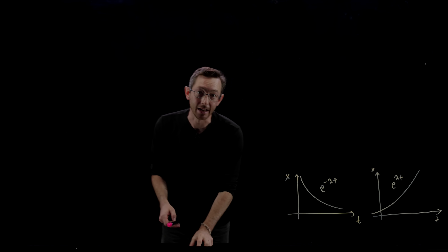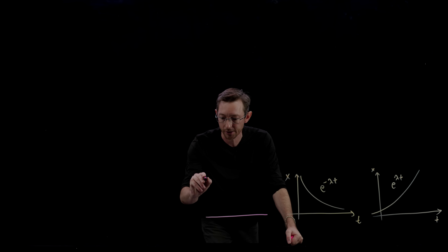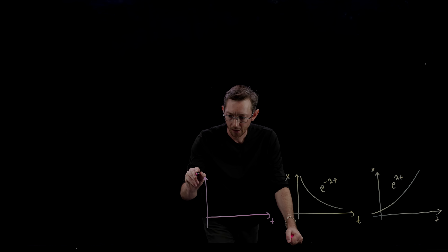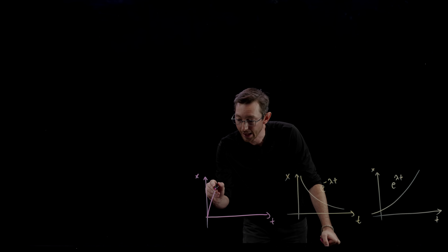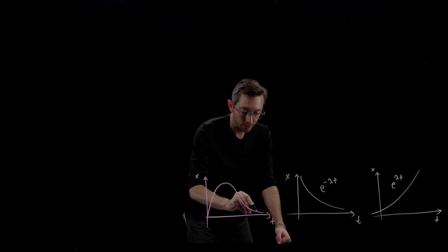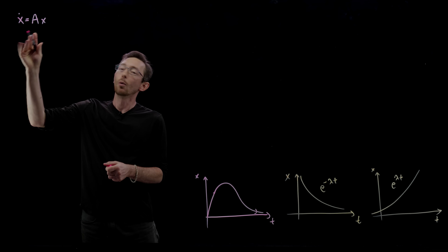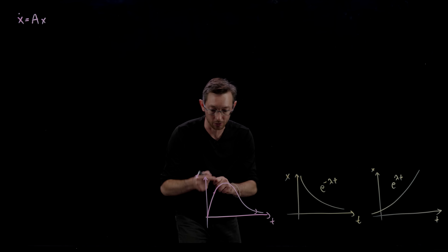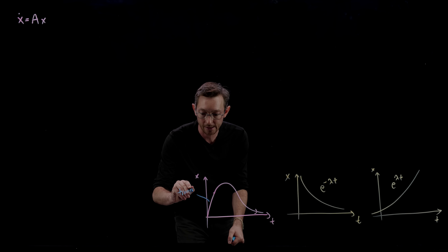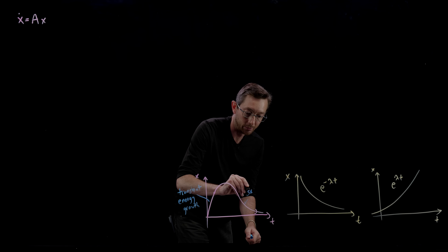There is a third case I'm going to show you today, which is super important for problems like turbulence. It looks a little different — somewhere between stable and unstable. The state of the system initially grows very large, looking like an unstable system, but then it turns around and eventually decays. This is called transient energy growth, followed by a stable decay.